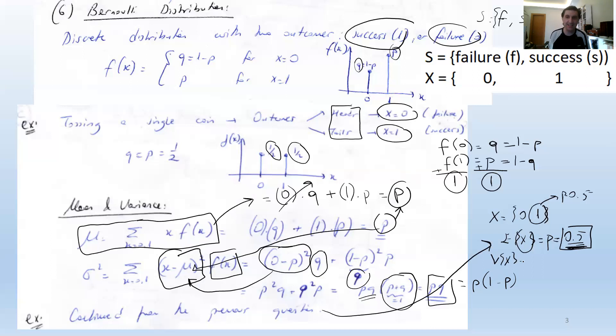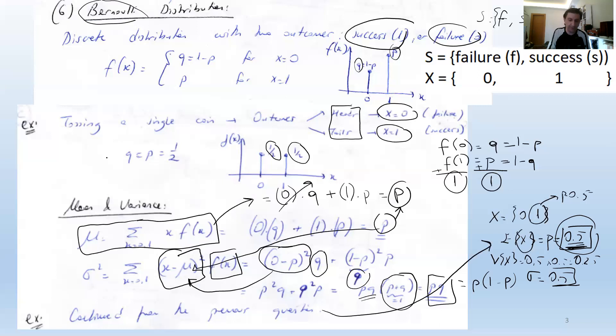For the coin tossing example, Var(X) = 0.5 × 0.5 = 0.25, so the standard deviation is 0.5. For a fair coin modeled as Bernoulli, the expected value equals the standard deviation — both are 0.5.